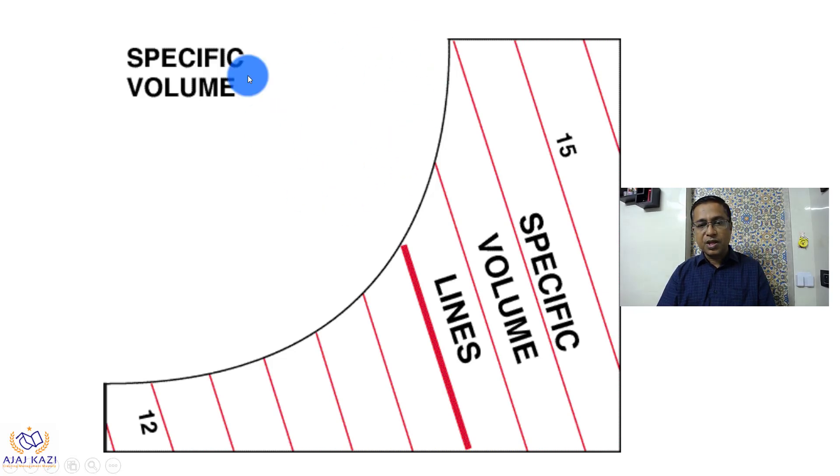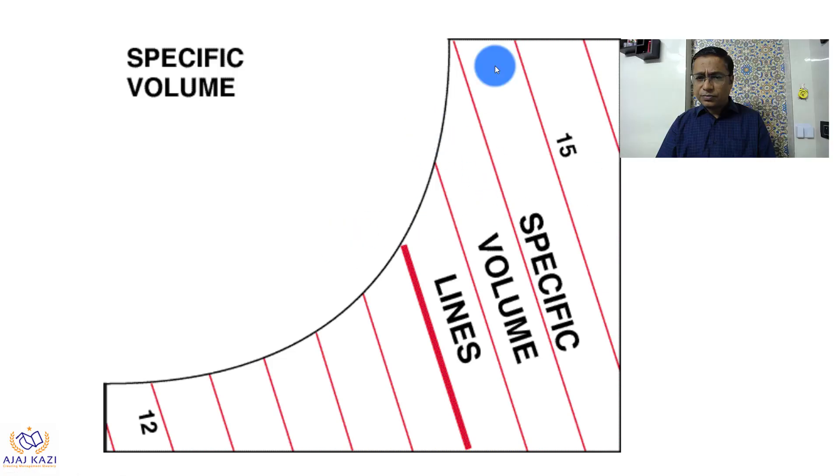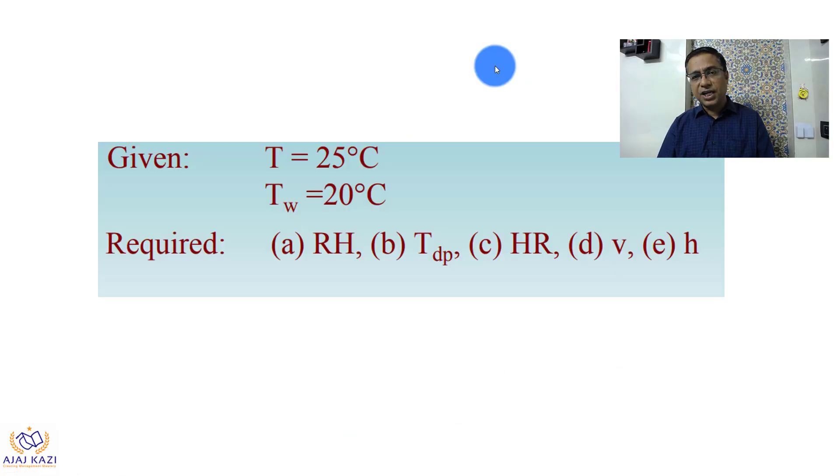So how do we get the required data? If you have the dry bulb temperature and wet bulb temperature, how can I get RH, the humidity ratio, the dew point, the volume, and the enthalpies? Let us look at how we can get this.